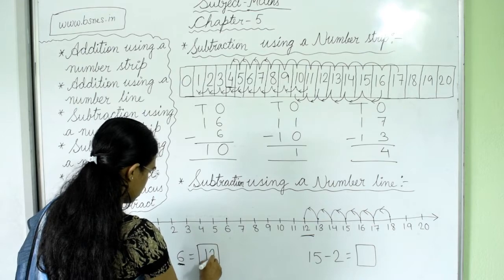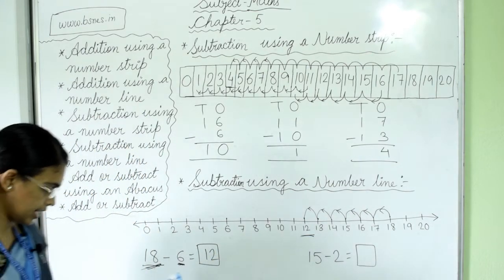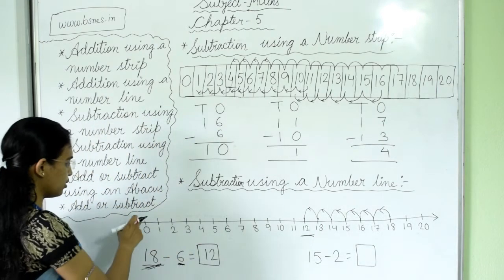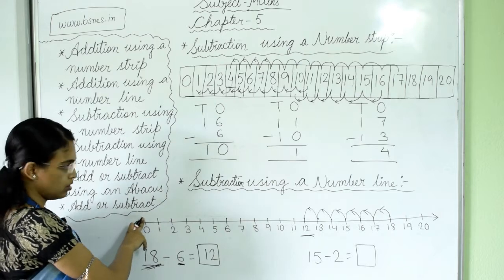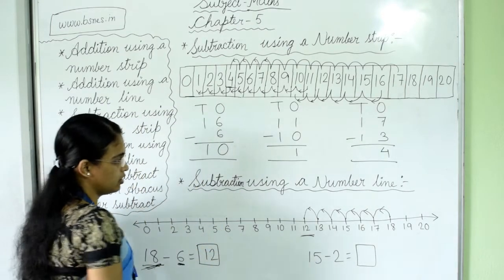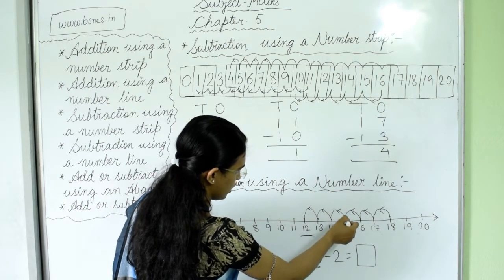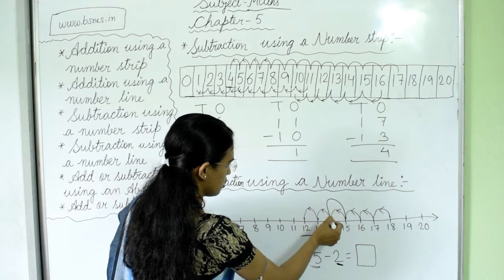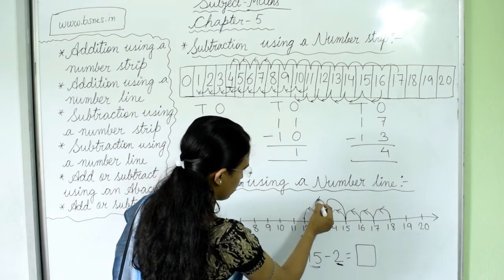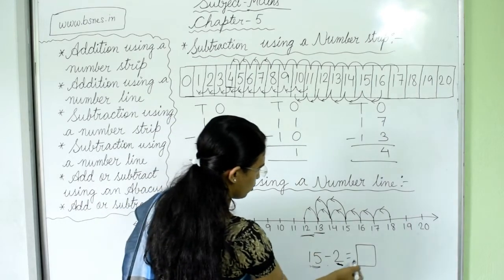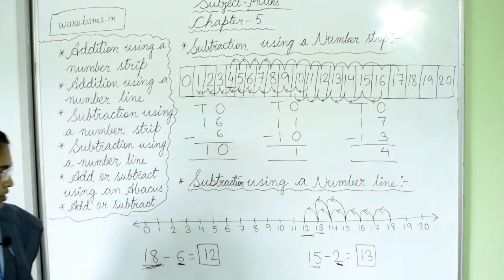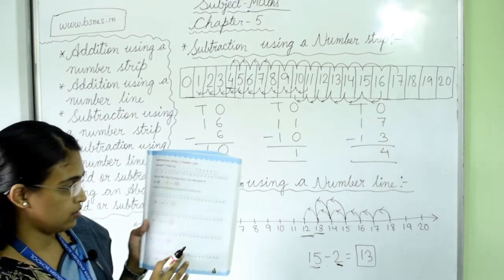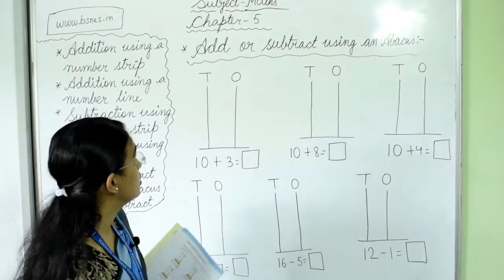Next question is 15 minus 2. In subtraction, we start from the given number, so we start from 15. Take 2 backward steps: 1, 2. Now we are at 13. So 15 minus 2 equals 13. Do the rest of the sums in your copy using this number line.